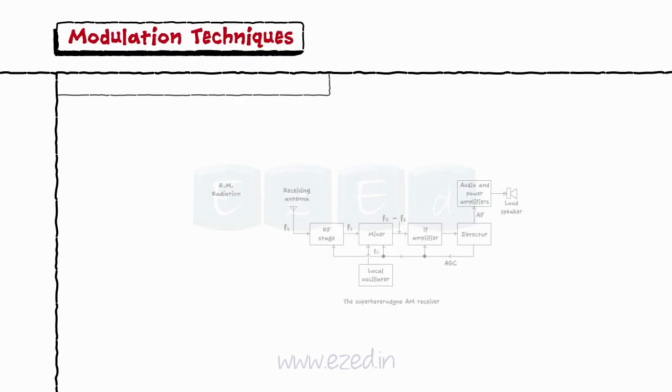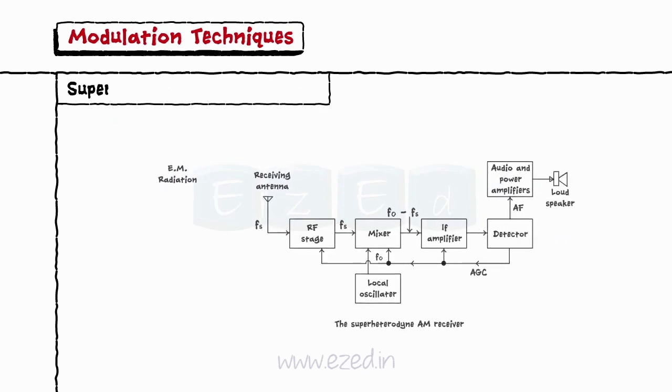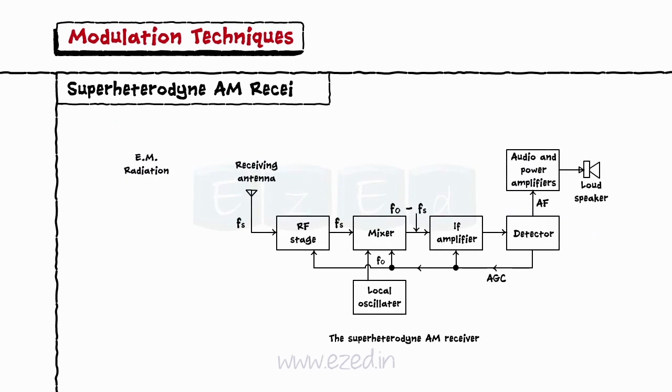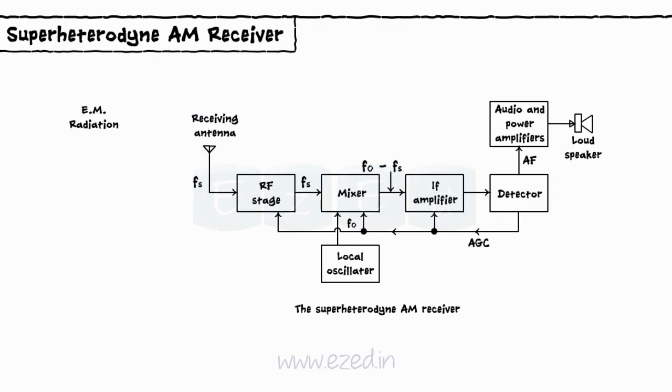The block diagram of a super-heterodyne AM receiver is as shown. Let us see the function of each block in detail.